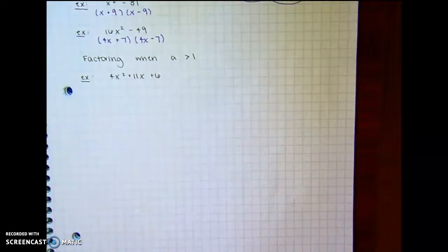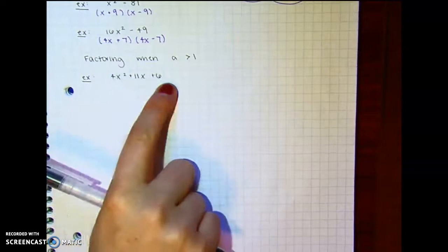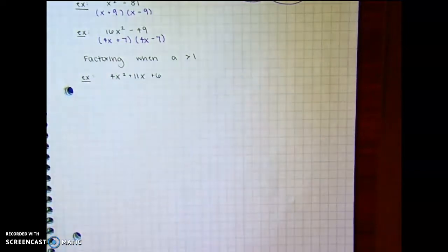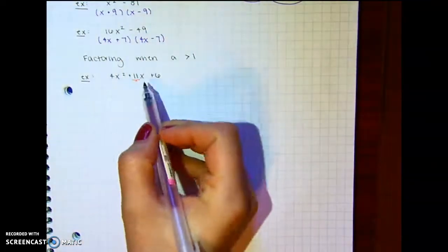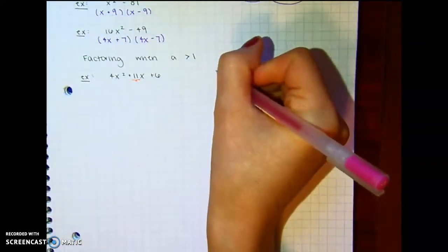4x squared plus 11x plus 6. So we have an a value here that's 4. So the first step is to factor out any common factors, which we don't have any, right? 4, 11, and 6, not divisible by the same number. So then we ask ourselves...